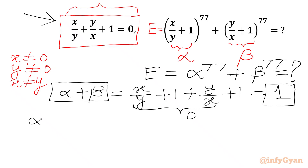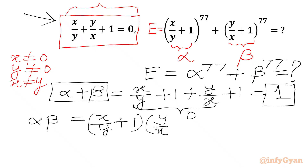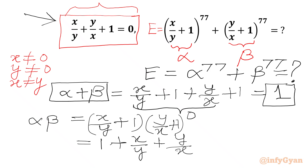Now we are going to calculate alpha times beta. So alpha * beta = (x/y + 1)(y/x + 1). Multiplying both brackets: x/y * y/x + x/y * 1 + 1 * y/x + 1 * 1 = 1 + x/y + y/x + 1. Since x/y + y/x = -1 from the given condition, this equals 1 + (-1) + 1 = 1. So alpha * beta = 1.